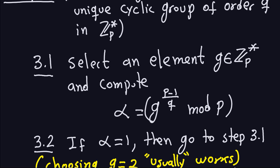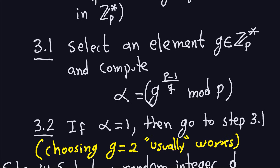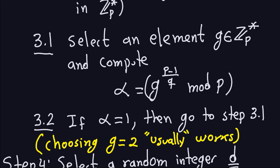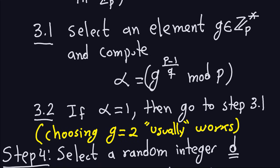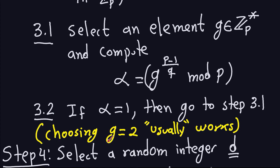To find alpha, split step three into two sub-steps. In step 3.1, select a random element G in Z_P* and compute alpha = G^((P−1)/Q) mod P. Note that (P−1)/Q is a whole number because Q divides P−1. If alpha equals 1, go back and choose another G. Stop when alpha ≠ 1. In practice, start with G = 2, as this usually works.